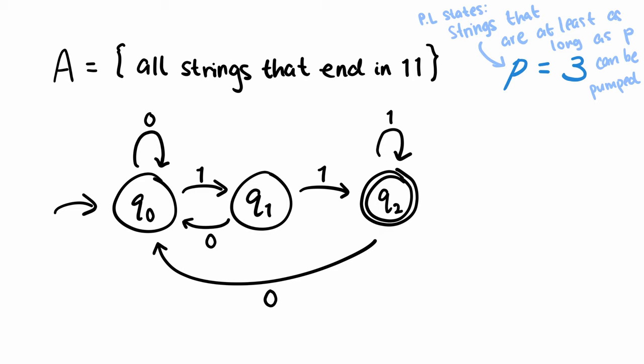Now let's see how the machine runs on some strings in A that are at least length 3, such as 011, 1011, and 01111. For all these strings, there must have been at least one repeated state which can provide a section of the string being pumped. So for 011, we revisited Q0 using the substring 0.